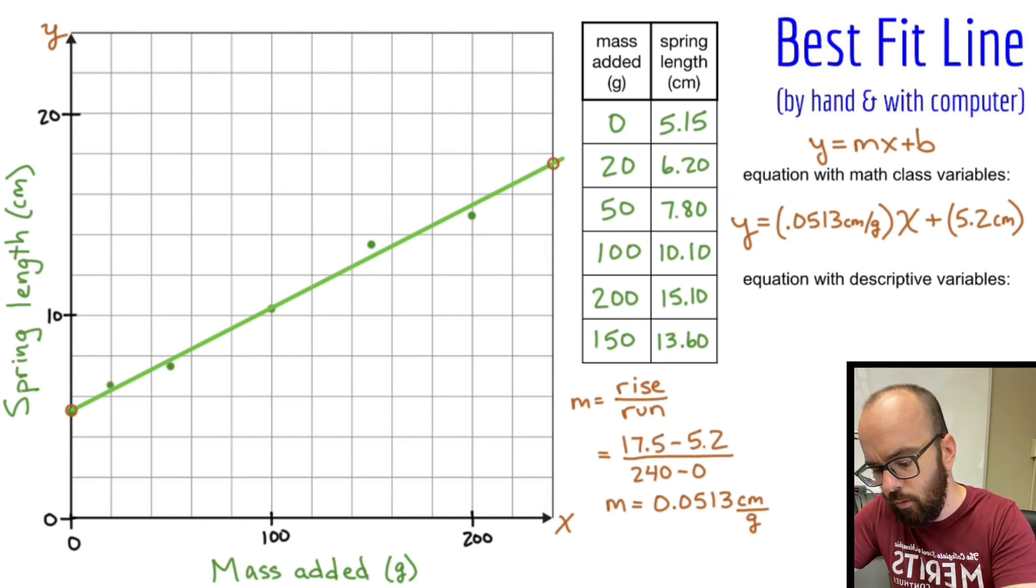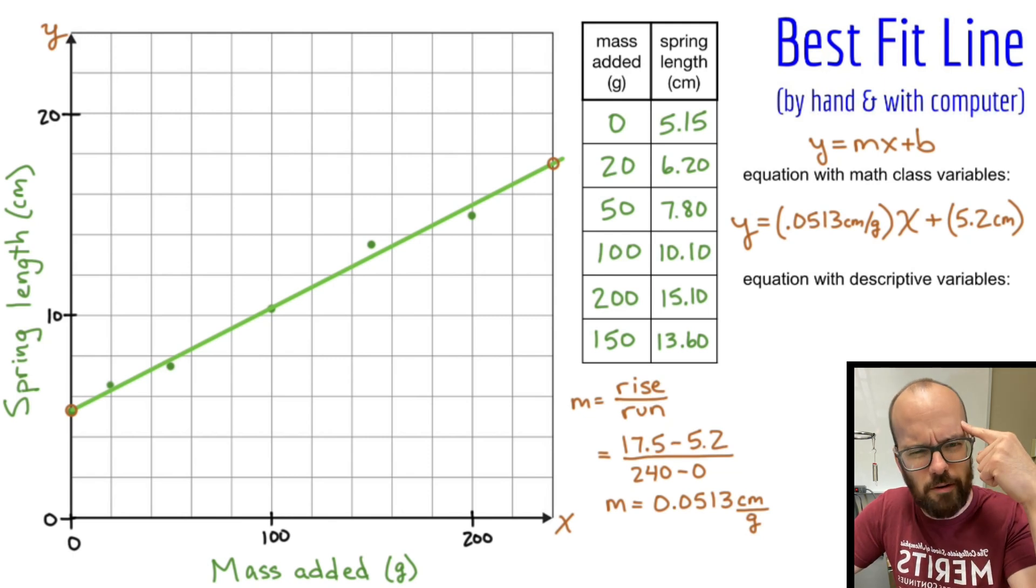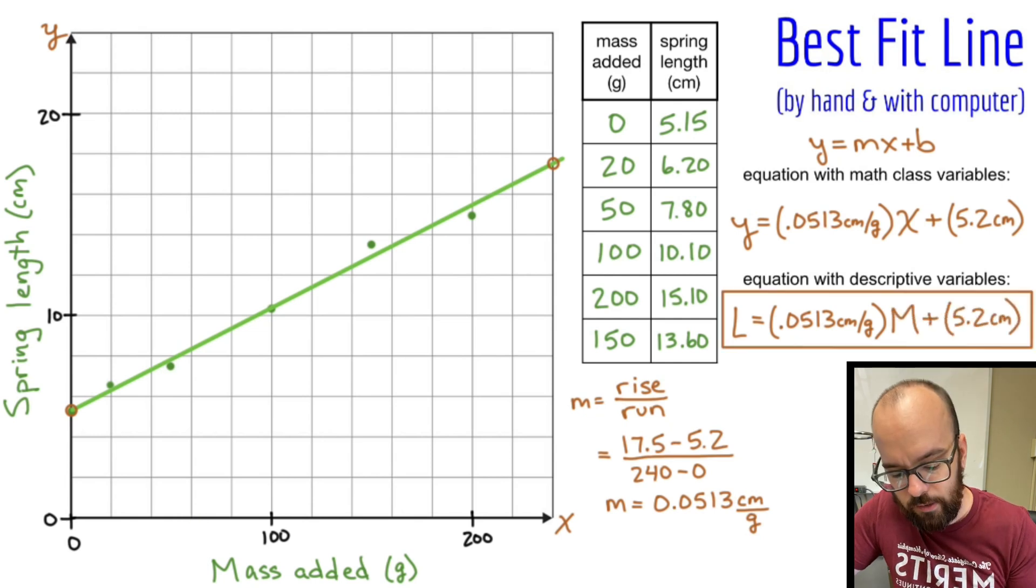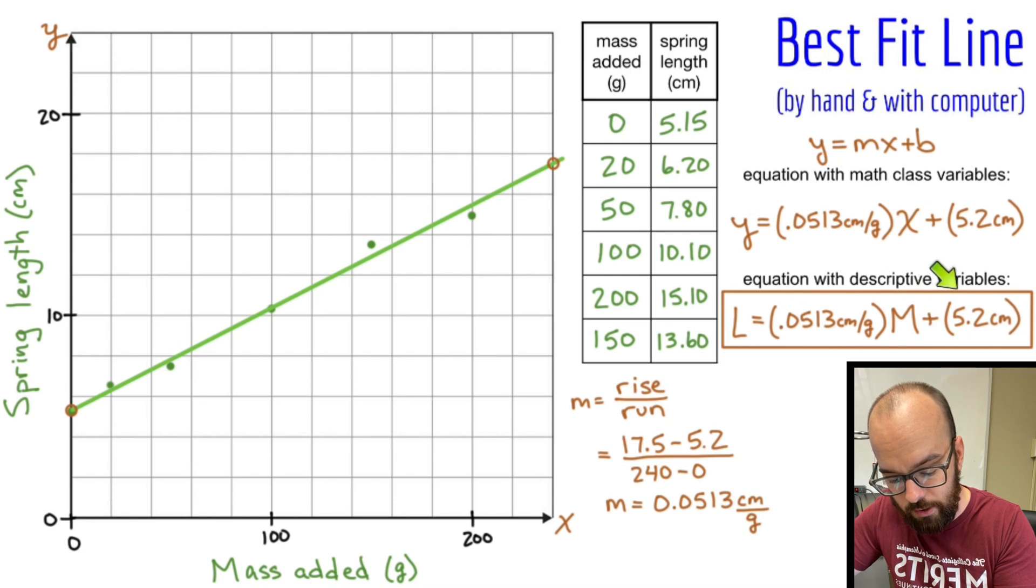Let's use variables to represent those. Instead of y, what could I use to represent length? Well, how about an L? That'll be a little bit easier to look at the equation. And when I see L, I know, oh, it's length. I don't have to think about what was my y-value. So L equals, I'll write my slope again. Instead of x, it's mass added. So I'll just use an M plus my 5.2 centimeters. And basically what this says is for this particular spring, if I add some amount of mass to that, I could substitute in any amount of mass and I can calculate what the length of my spring should be.